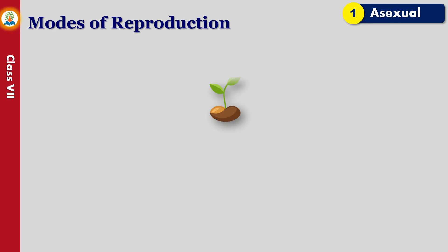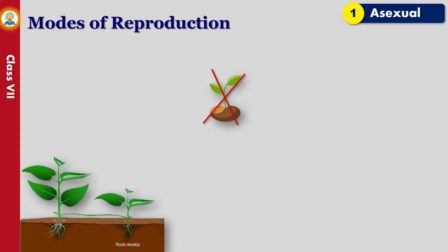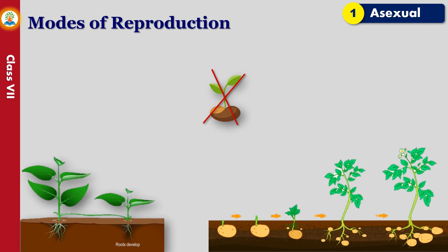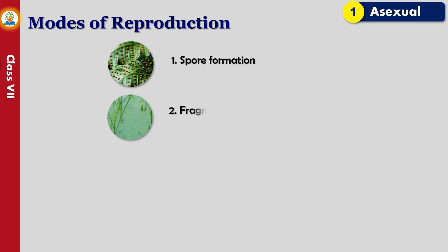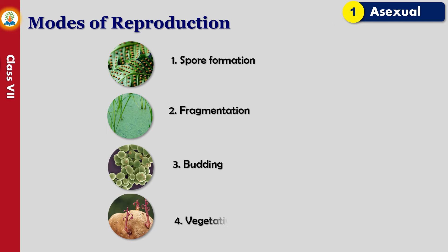In asexual reproduction, the plant reproduces without the involvement of seeds. A new individual is produced from a single parent, and as a result, the offspring produced is identical to the parent. Plants adopt different methods for asexual reproduction: spore formation, fragmentation, budding, and vegetative reproduction.